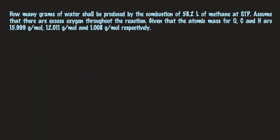Let's move on to question number 2. How many grams of water shall be produced by the combustion of 58.2 litres of methane at STP? Assume that there is excess oxygen throughout the reaction, given that the atomic masses for oxygen, carbon and hydrogen are as provided. The first step is to write the combustion reaction. Methane is CH₄.